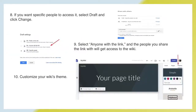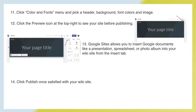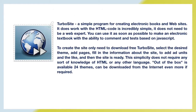If you want specific people to access it, select 'drafts' and click 'change,' then select 'anyone with link' and the people you share the link with will get access to the wiki. Then customize your wiki's theme by clicking the color and fonts menu and picking a header, background, font colors, and image. Click the preview icon at the top right to see your site before publishing. Google Sites also allows you to insert Google documents like a presentation, spreadsheet, or photo album into your wiki site from the insert tab.